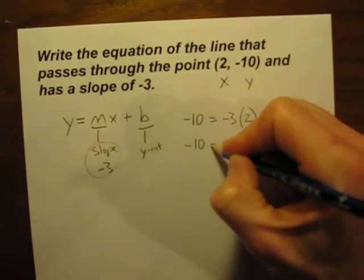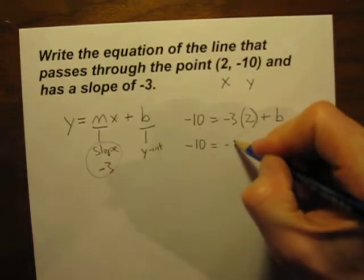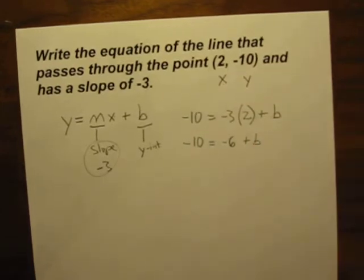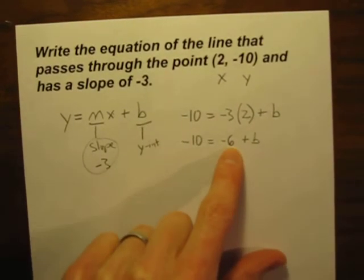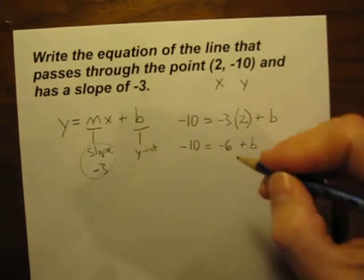I'll rewrite: negative 10 equals negative 3 times 2 is negative 6, we'll keep the plus b there. We want to solve for b, we want to get it by itself, so let's get rid of this negative 6. To get rid of a number you always do the opposite; the opposite of negative 6 is plus 6.